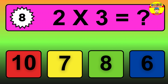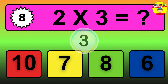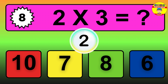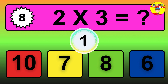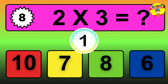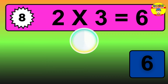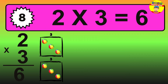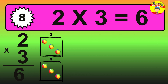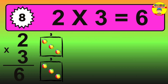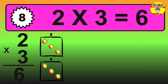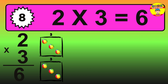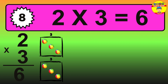Question 8. 2 times 3 equals what? The answer is 2 times 3 is 6. To calculate, we have 2 groups with 3 balls each one. So how many balls do we have? 6 balls.